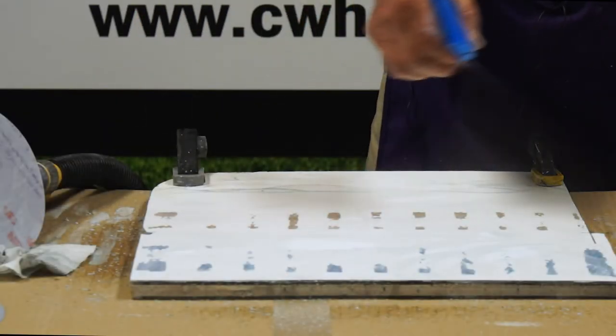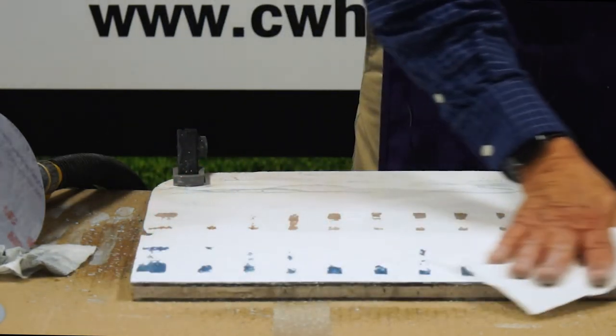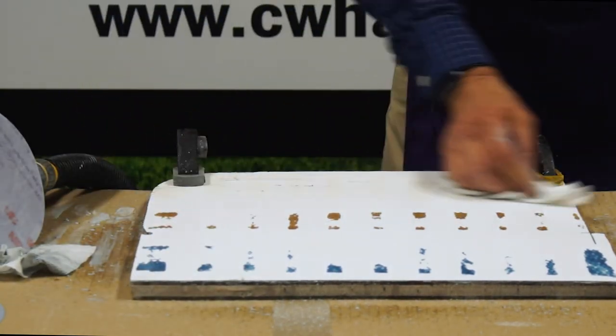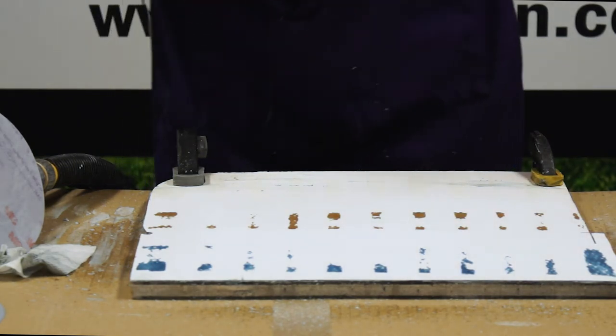At this point we should have a finish that would be very easy to buff. Starting with a P2000 as your starting point to polish, it would be very quick and very easy to bring that up to a very high luster.